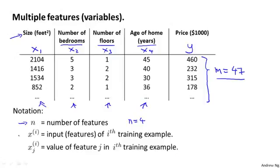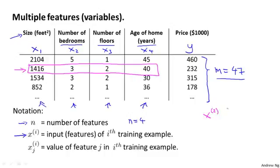So I'm also going to use x superscript i to denote the input features of the i-th training example. As a concrete example, let's say x2 is going to be a vector of the features for my second training example. And so x2 here is going to be a vector 1416, 3, 2, 40, since those are my four features that I have to try to predict the price of the second house.